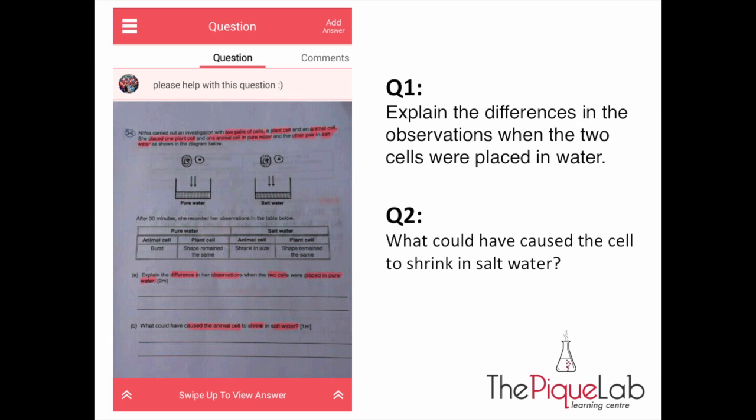So the first question they're asking now is, explain the differences in the observations when two cells were placed in water. The second question is, what could have caused the cell to shrink in salt water? I'll bring you through the first question first.